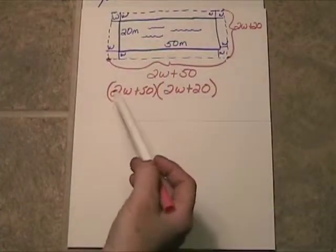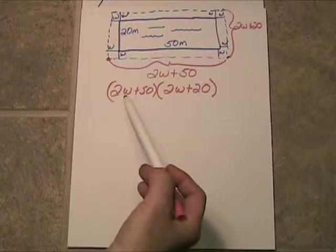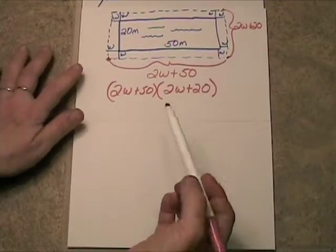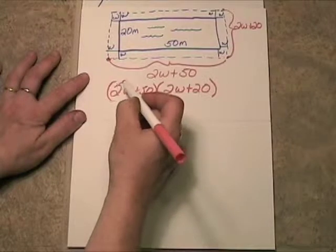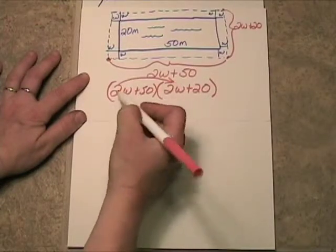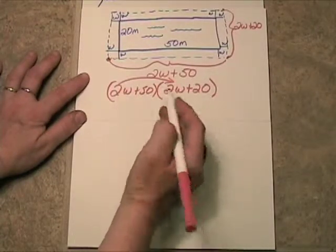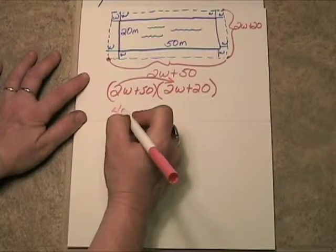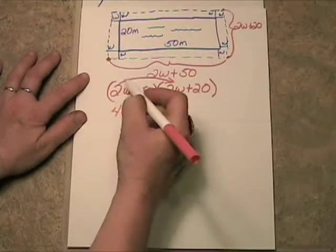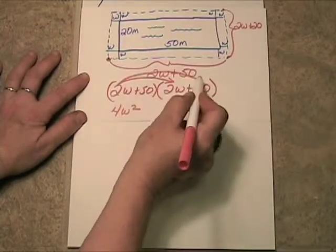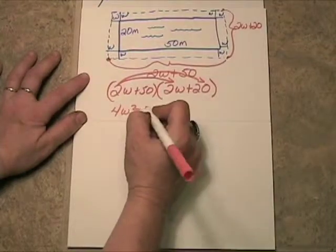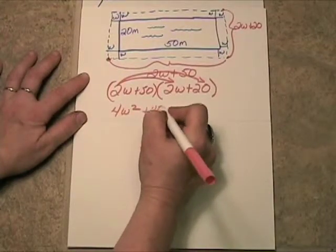Alright, we're going to have to take everything inside this first quantity times everything inside this second quantity. So, it's the distributive property for us. We'll take two w times two w, and we'll get four w squared. Now, we'll take that two w times this 20, and we'll get 40 w.